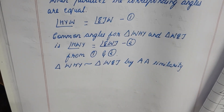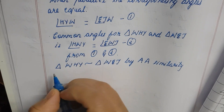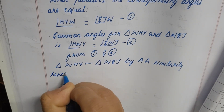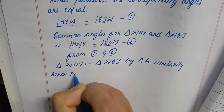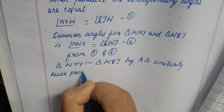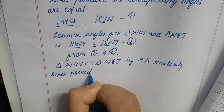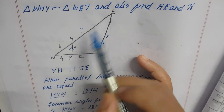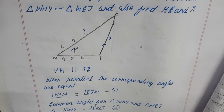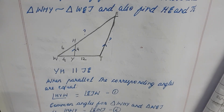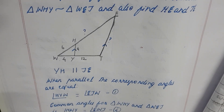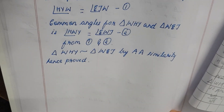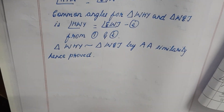Hence proved. Now the second part of the sum requires us to find HE and TE. The sum proceeds further.